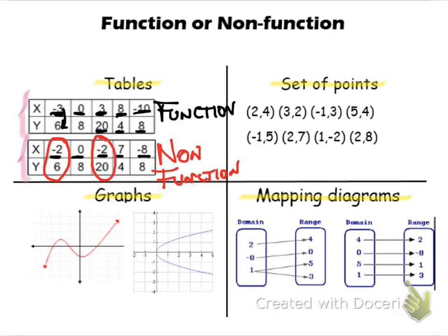Now, looking at our set of points, I look at the first one and notice that I have x values of 2, 3, -1, and 5. None of my x values are repeated, so I can assure this will be a function because there's no way I will get different y values for the same x.